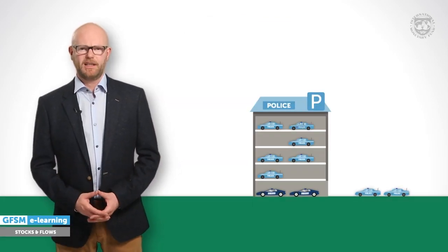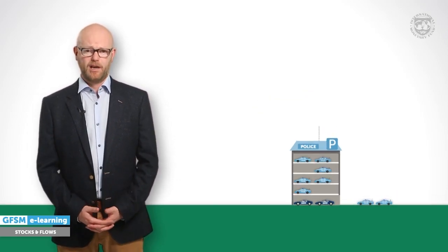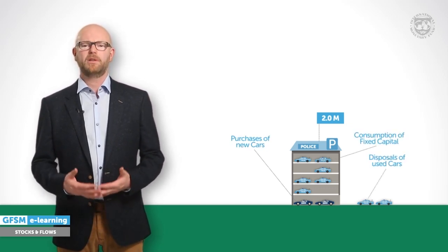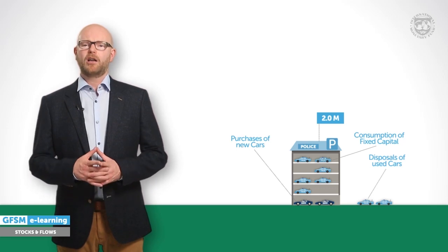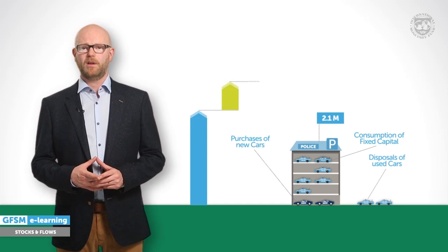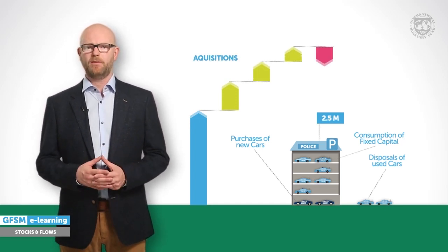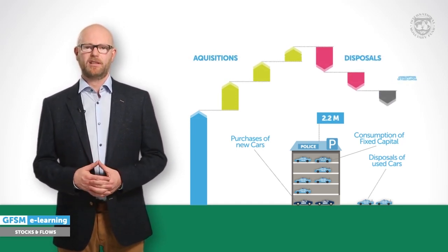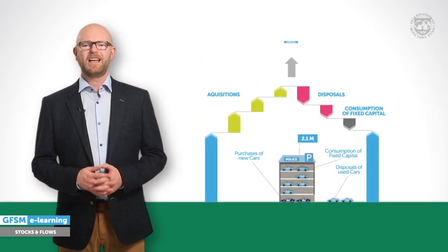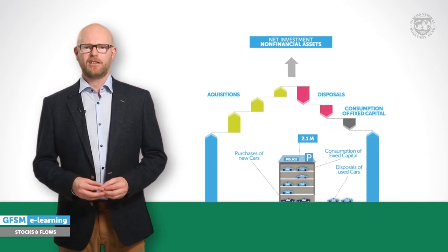So even if the number of cars remains unchanged, the value of the fleet can vary. Now let's put this together in one picture. At the start of the period, the government already had a fleet of cars. Then it bought some new cars, sold others, and at the end was left with a different stock with a different value. The closing stock is accordingly the result of the opening stock, plus all acquisitions, minus all disposals, and minus the consumption of fixed capital. Together, GFSM calls these flows net investment in non-financial assets.